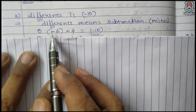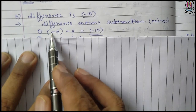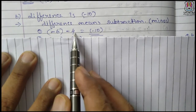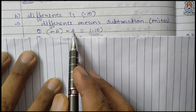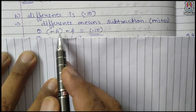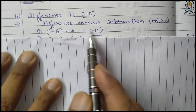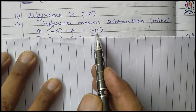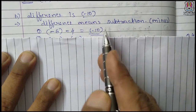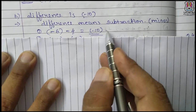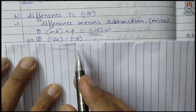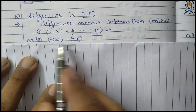The first example: minus 6 minus 4. Minus minus is plus, so the answer is minus 10. This is the first example to solve this.